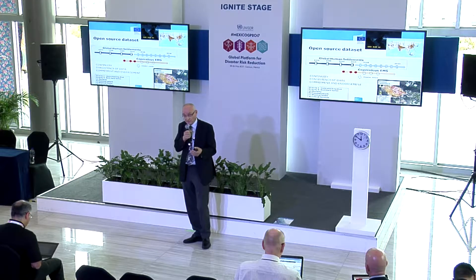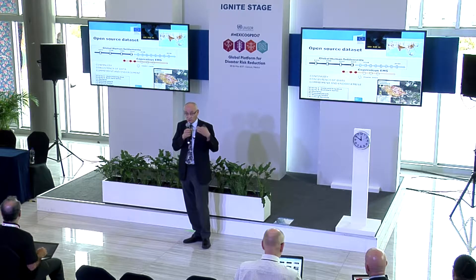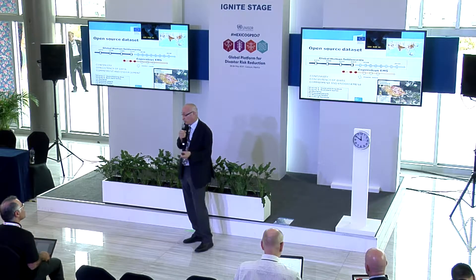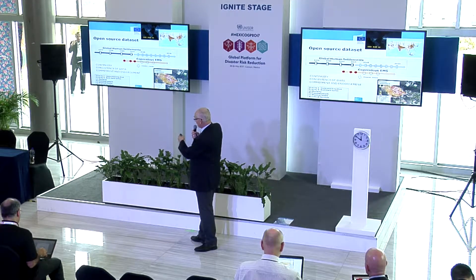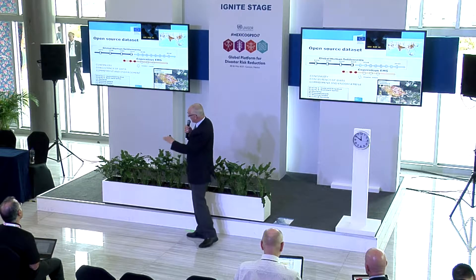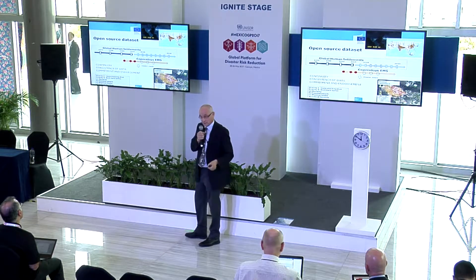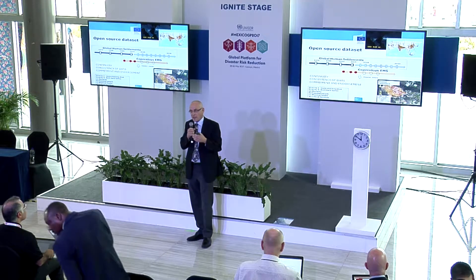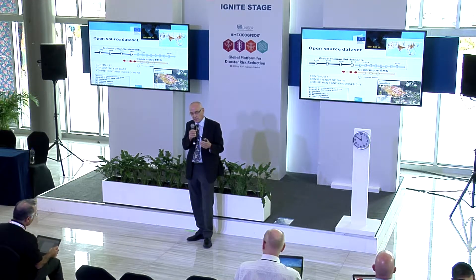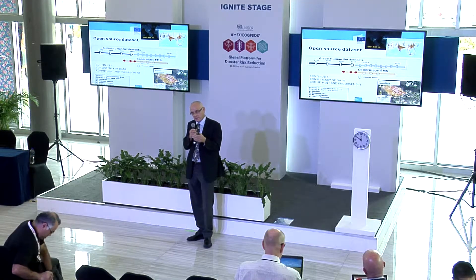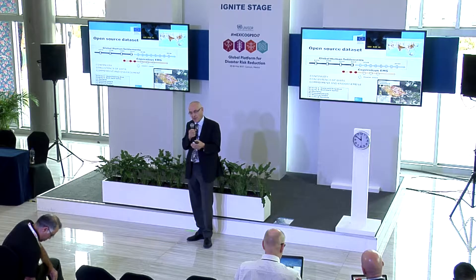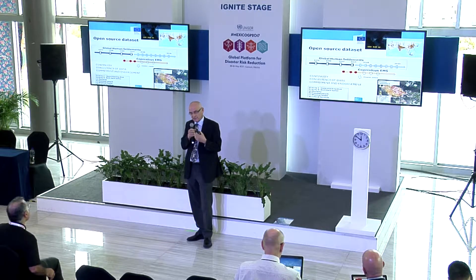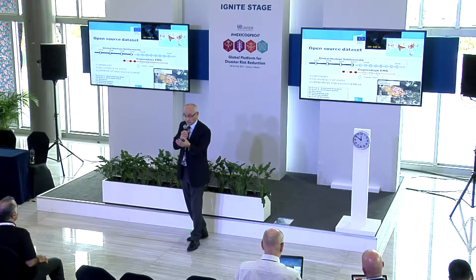This is data that we put online for you to use, if it is useful to you. The second product, represented by the damage map on the bottom right, is about triggering a service when a disaster happens. A company maps the damage and provides the information to us, and that information is open for you to use as well.